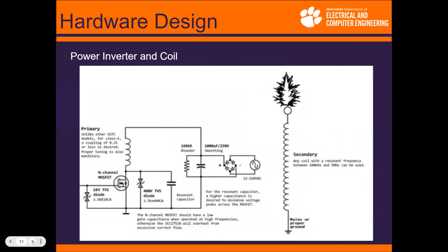During the demo, the function generator sweeps from approximately 10 kHz down through 8K, 7K, 6K, 5K, 4K, 3K, 2K, and back to 1 kHz, with the pitch of the Tesla coil's electrical discharge audibly shifting downward with each step.